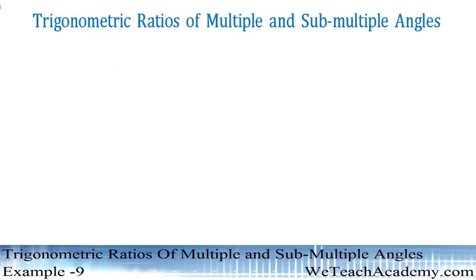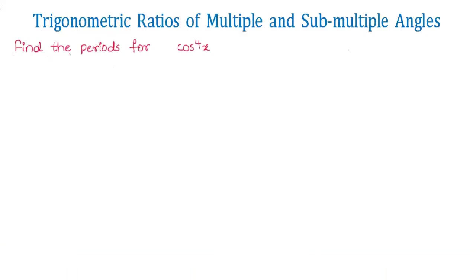Hey guys, welcome to WayTeach Academy. In this presentation we are going to discuss a few examples on the formulas of trigonometric ratios of multiple and sub-multiple angles. The given example is: find the period for cos to the power 4x. In order to find the period, let us name this function as f of x, so f(x) = cos⁴x.